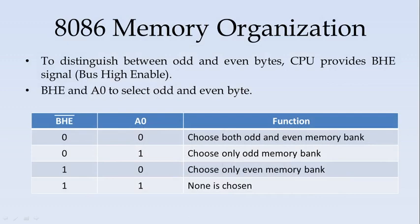So 8086 memory organization, even though it has got 16 bit wide data bus, it can separately communicate with the data using a byte instruction also. To distinguish between odd and even bytes, the CPU provides bus high enable signal which is active low signal. To differentiate between odd and even byte, the bus high enable signal and A0 signals or address 0 line are used to select.